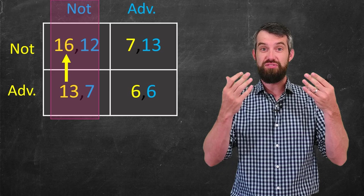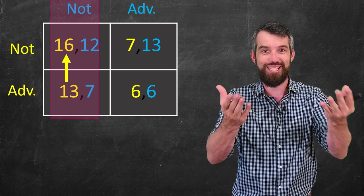But if I'm looking at this through the lens of firm one, it's a pretty easy decision. If they don't advertise, they'd make 16 units. If they did advertise, they'd make 13, 16s bigger than 13 last time I checked. So they should not advertise.